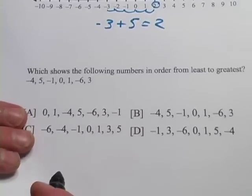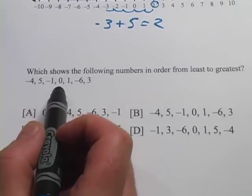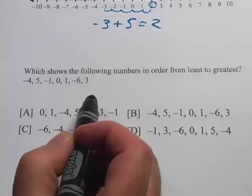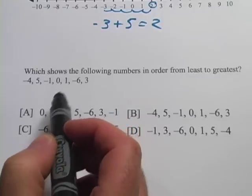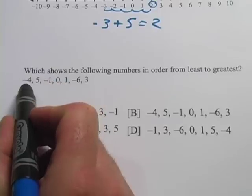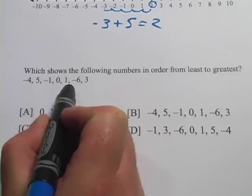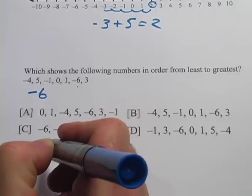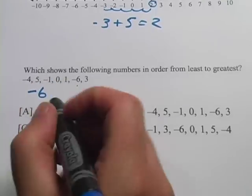Let's look at another one here. This one says, which shows the following numbers in order from least to greatest? So the smallest numbers are going to be the negative ones that actually are the biggest negative numbers. So let's see, I've got a negative 4 here. I've got a 5, negative 1, 0, 1, negative 6, and 3. Negative 6 is going to be the one that's the very smallest number, because it's most toward the negative.